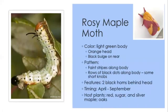Our last silk moth is the rosy maple moth, whose caterpillar is also called the green-striped maple worm. This can cause damage to maple trees in large populations. The caterpillar is light green with an orange head and a black bulge near the rear. It has faint stripes along the body and rows of black dots, plus two black horns behind the head. Host plants are maples and oaks; you can find them April through September.